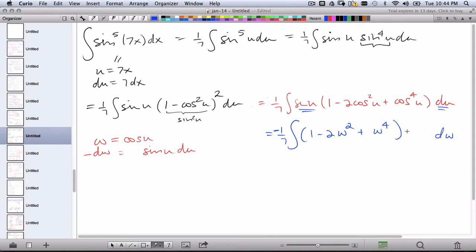And this is all times the infinitesimal dw. Next, we simply perform the integration using linearity. So we have negative 1/7th times w plus 2 w cubed over 3 times 7, plus w to the fifth over 5 times 7.